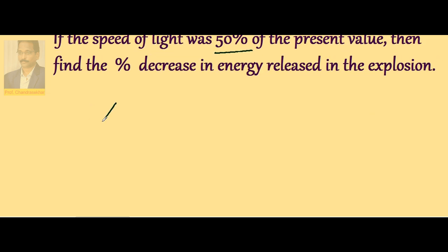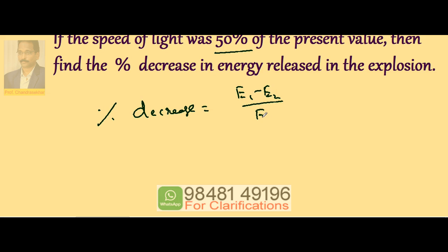We can write percentage decrease as decrease by initial into 100. E1 is the initial, E2 is the final. So the difference is decrease: E1 minus E2 by E1 into 100.